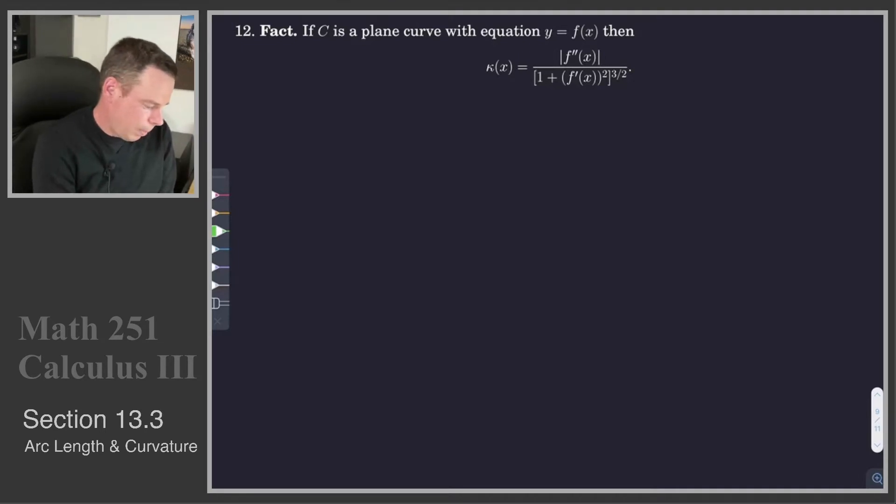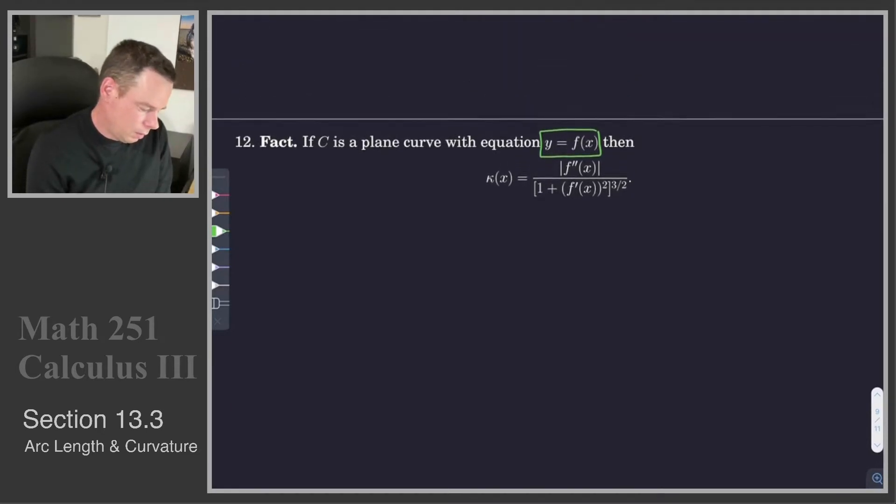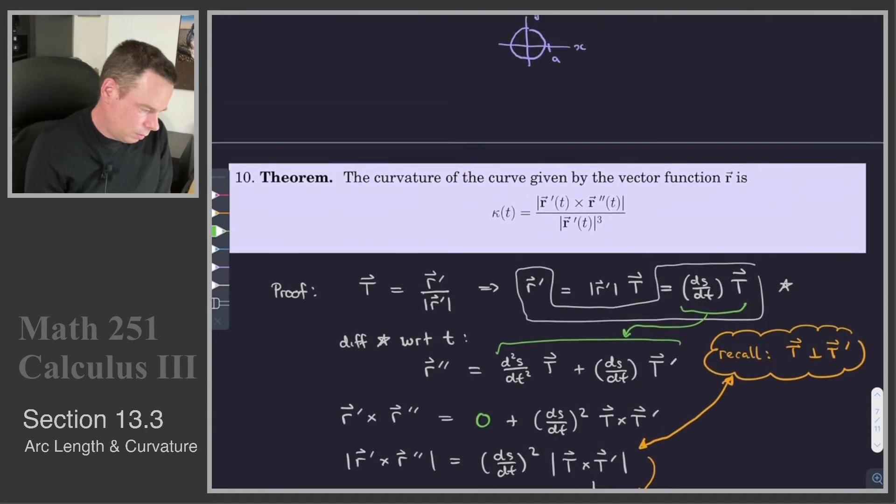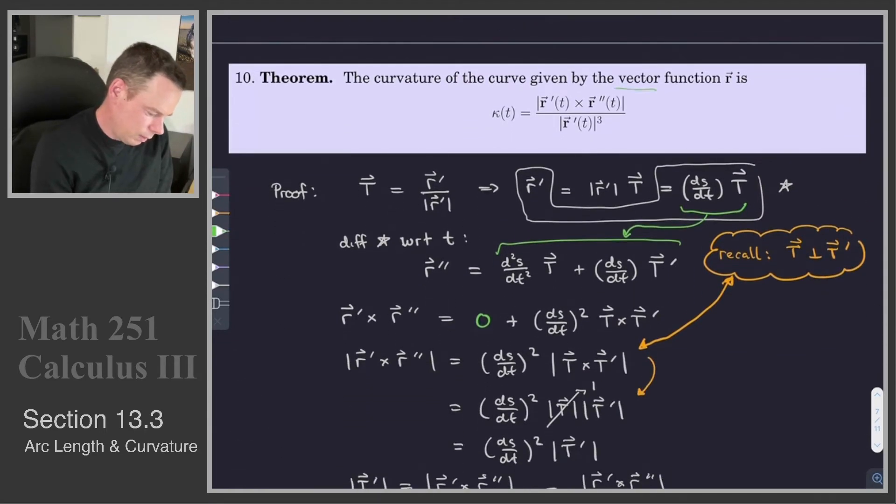So we're thinking of C as a plane curve given by an equation y equals f of x. And we want to take the ideas that we just developed about curvature and apply them to this kind of function. In particular, we're going to use this result. The result that says the curvature of a parametrized curve can be computed by taking the cross product of its derivative vector function across the second derivative vector function, and then the magnitude of that, and then dividing by the length of the derivative function cubed.